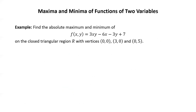Let's do one more example. Find the absolute maximum and minimum of f(x,y) = 3xy minus 6x minus 3y plus 7 on the closed triangular region R with vertices (0,0), (3,0), and (0,5). Pause the video and try this example yourself, then resume to check your answer. Let's start by drawing a picture of the closed triangular region with those vertices.